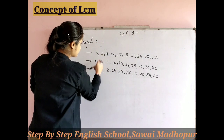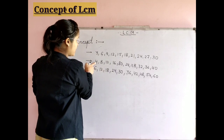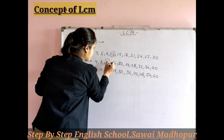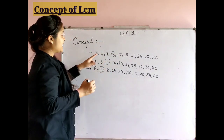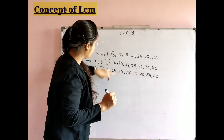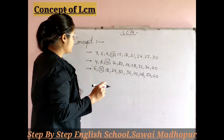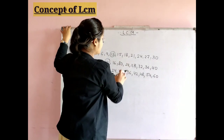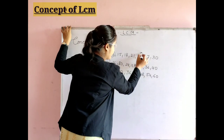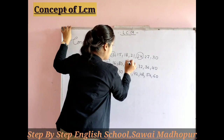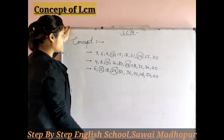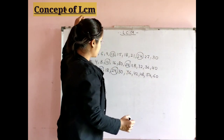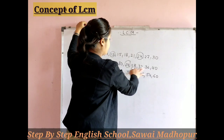So the common multiple is something that is common to all. The first common multiple is 12. Then 24 is also a common multiple — it appears in all three tables. So 12 is a common multiple, 24 is a common multiple, and so on.